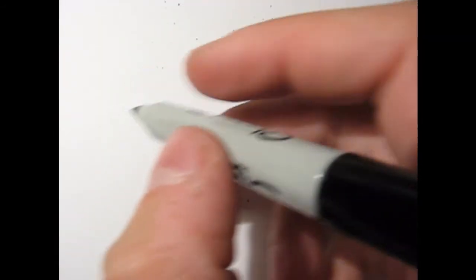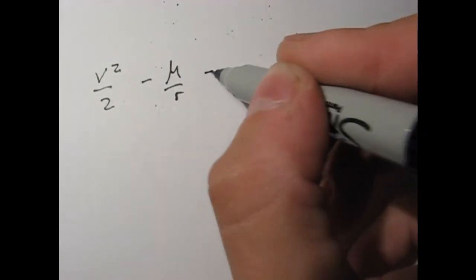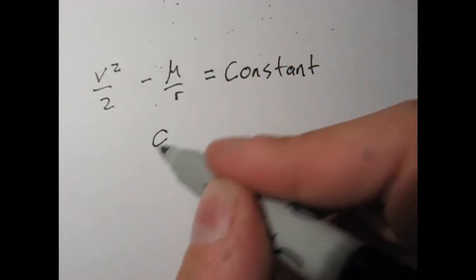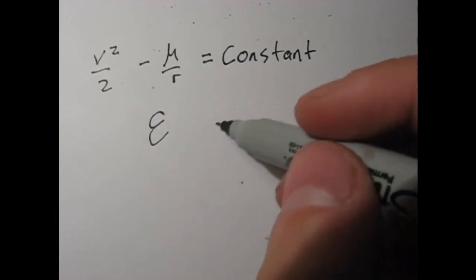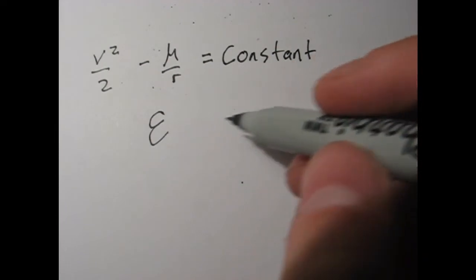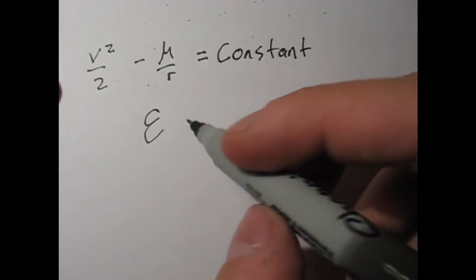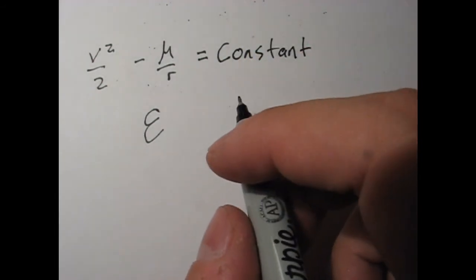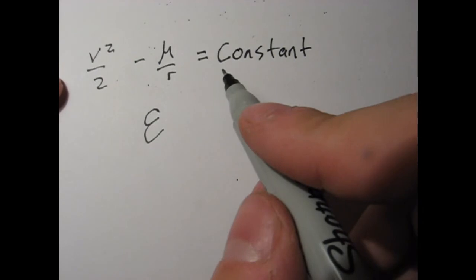And finally, we get v squared over 2 minus mu over r is equal to a constant. This constant here is the specific mechanical energy, epsilon. And what does it mean to say specific? Well, it's the mechanical energy divided by mass. We cancel mass out of the equation because it becomes more general that way. You'll see that a lot in different space equations and other science equations — like in thermo. I think it's so that you can have one equation for every problem.